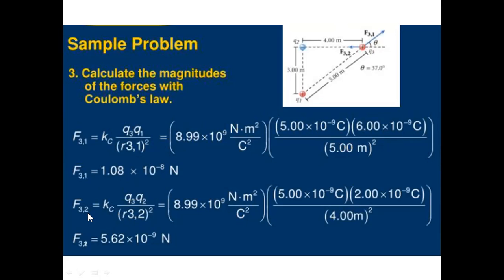For electrostatic force F32, since Q3 is positive and Q2 is negative, the positive moves toward the negative. Using Kc times Q3 over Q2 divided by R32 squared: 8.99 times 10 raised to 9, multiplied by 5 times 10 raised to negative 9 coulombs, multiplied by 2 times 10 raised to negative 9 coulombs, over 4 meters squared. This gives F32 equals 5.62 times 10 raised to negative 9 newtons.